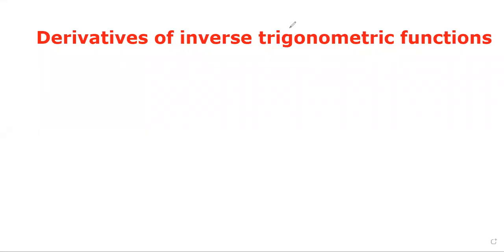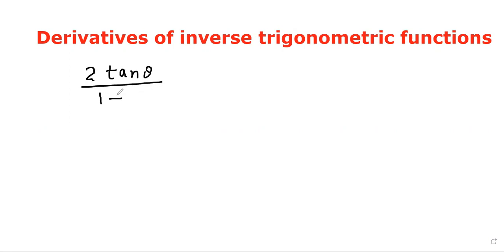In the previous video we studied the derivatives of inverse trigonometric functions. In this video we are going to study a little more about such functions. First, let's revise the formula: 2 tan θ divided by 1 plus tan² θ equals sin 2θ.